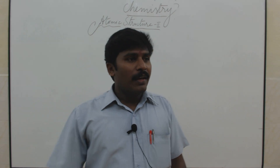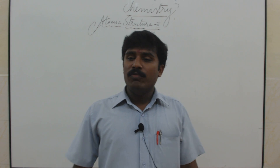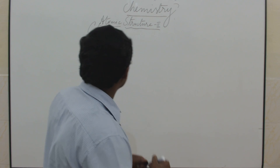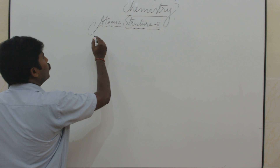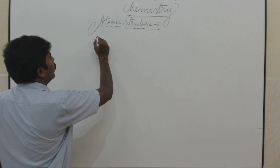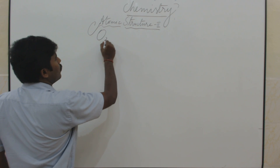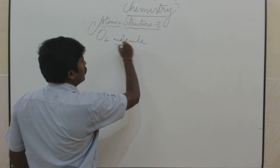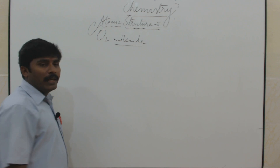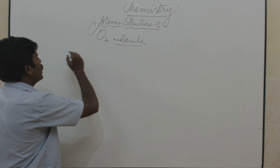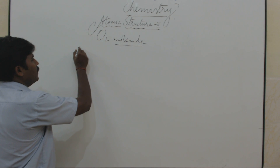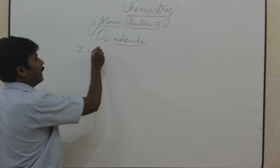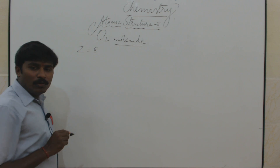The next topic is the MO diagram for oxygen molecule. What is the atomic number of oxygen? It is equal to 8.